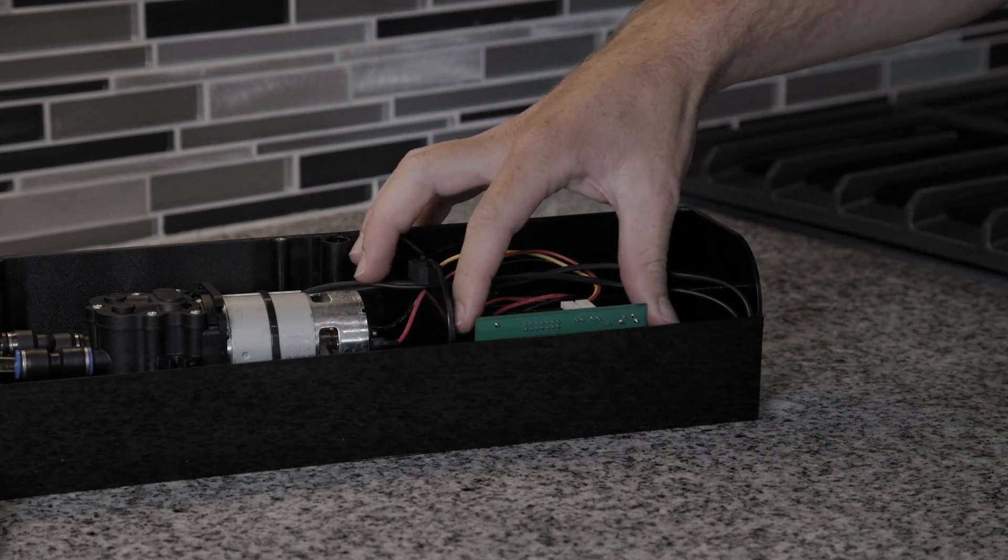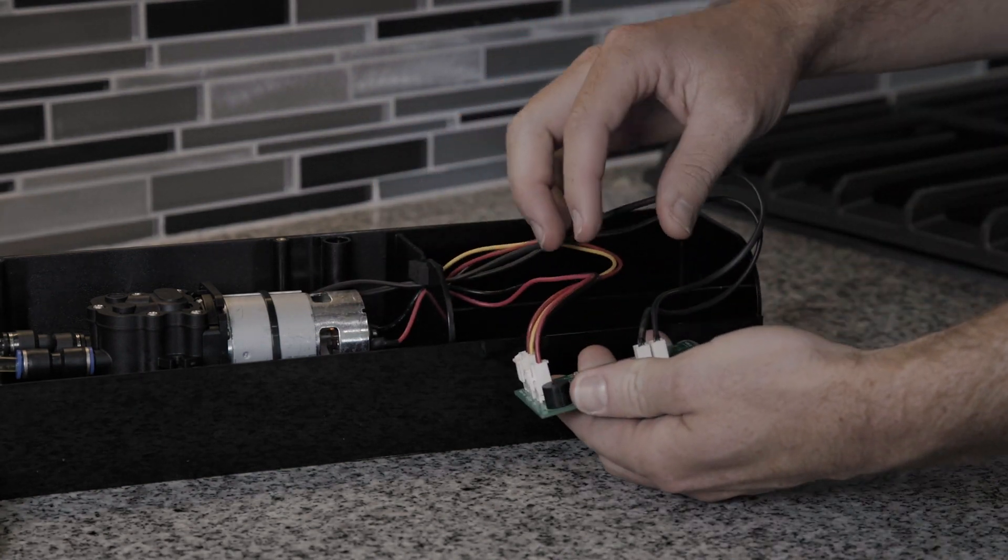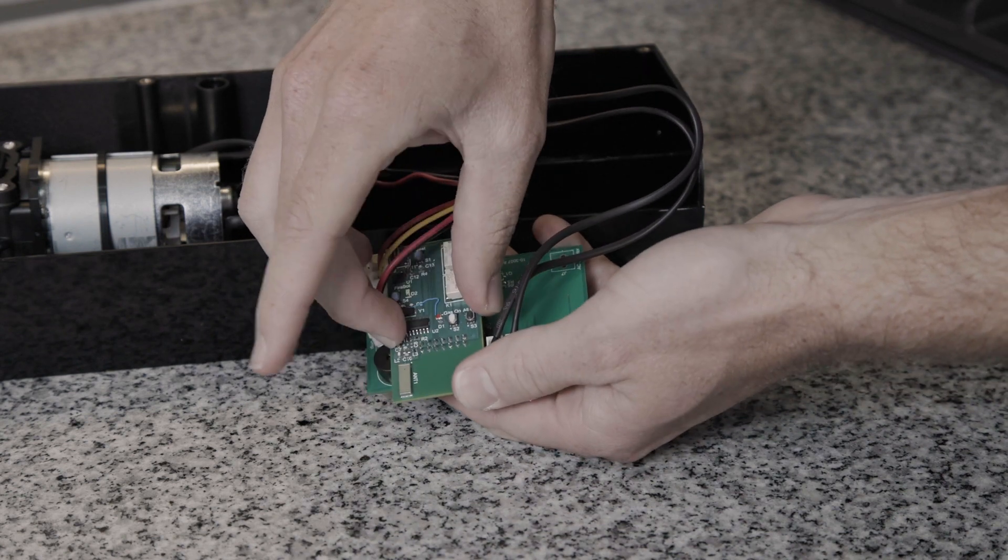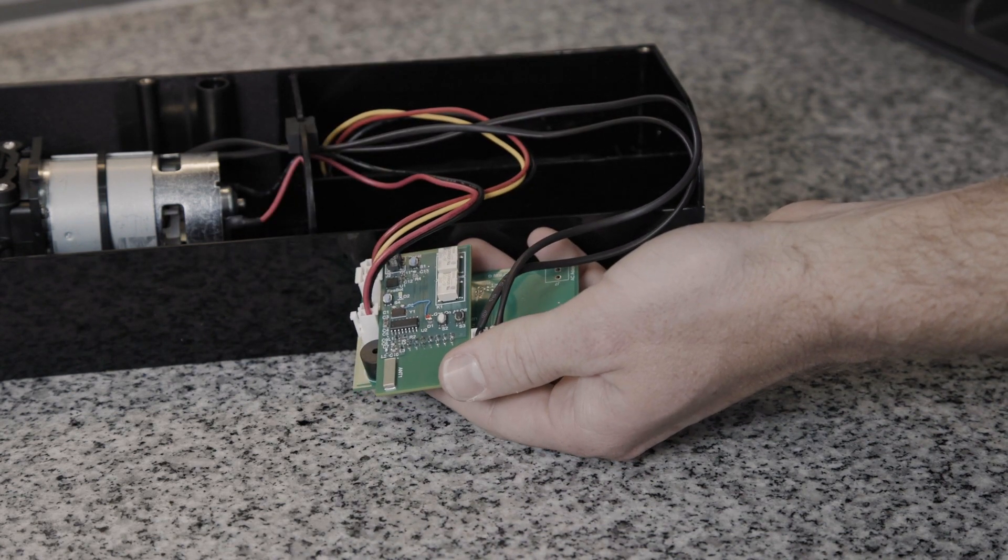First step is going to be to remove the circuit board from your FireBot. Take the circuit board from the gas valve shutoff. You're going to connect that into the FireBot circuit board.